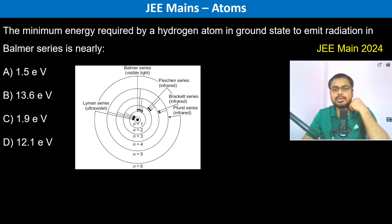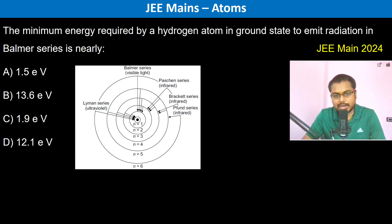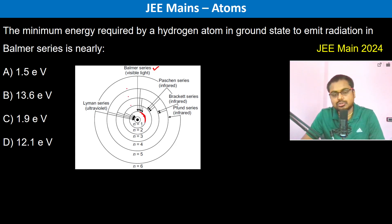The minimum energy required by a hydrogen atom in its ground state to emit radiation in the Balmer series. In the Balmer series — along with Lyman, Paschen, Brackett series — the electrons are falling to the second orbit, from the third, fourth, fifth and so on.